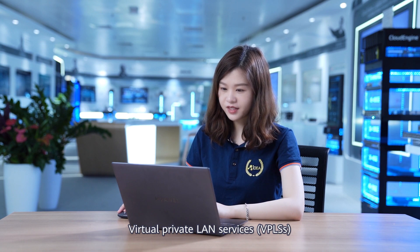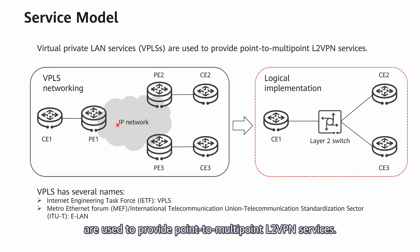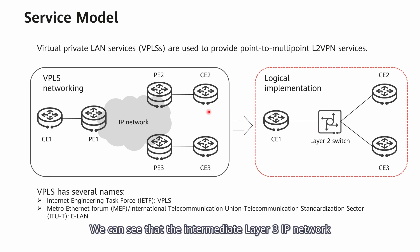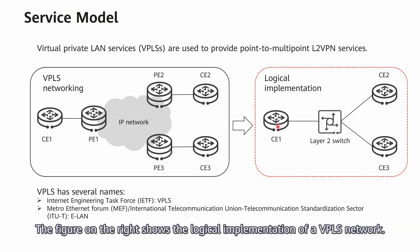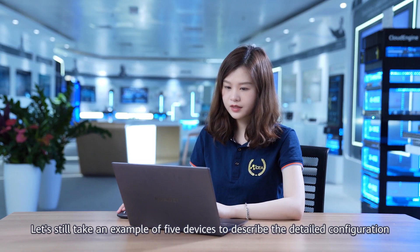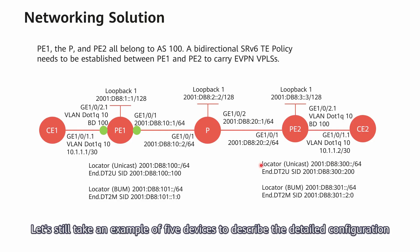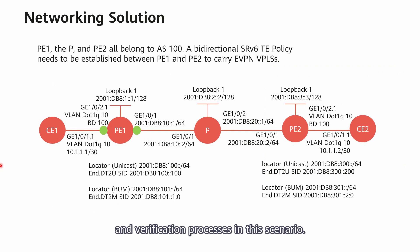Virtual Private LAN Services are used to provide point-to-multipoint L2 VPN services. The figure on the left shows a typical example of VPLS networking. We can see that the intermediate Layer 3 IP network simulates a Layer 2 switch to which CEs are connected. The figure on the right shows the logical implementation of a VPLS network.